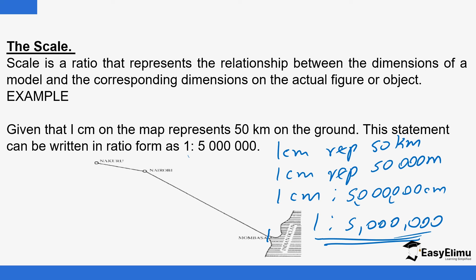So the scale can be given in ratio form or as a representative scale. In ratio form, the one centimeter is on the map and the five million is on the actual ground — representing the distance you would cover traveling from Nairobi to Mombasa or from Mombasa to Nairobi along that route.